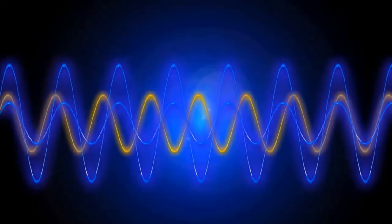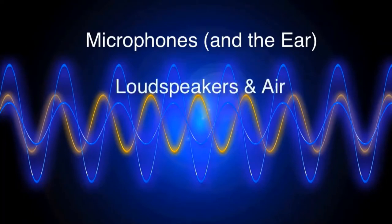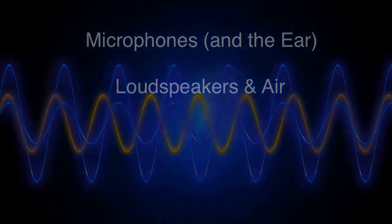Next time, we'll look at microphones in a little more detail. It ends up the ear is a microphone that converts sound waves to electrical signals that are passed to the brain. Then we'll look at loudspeakers and a simulation of how air responds to pressure waves.